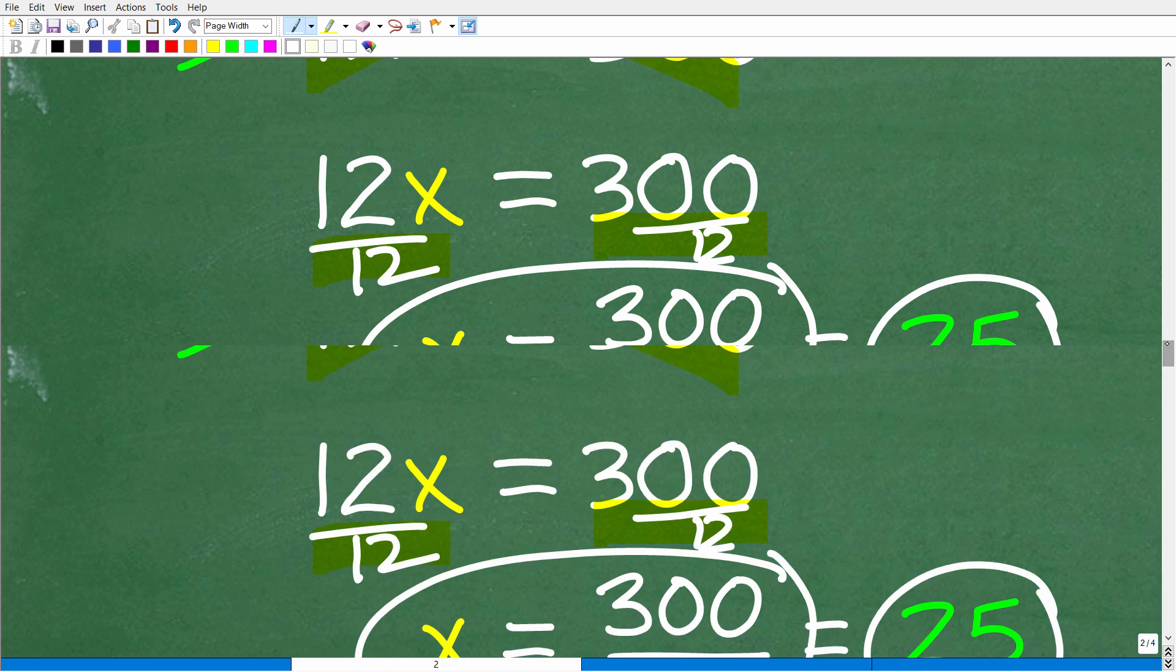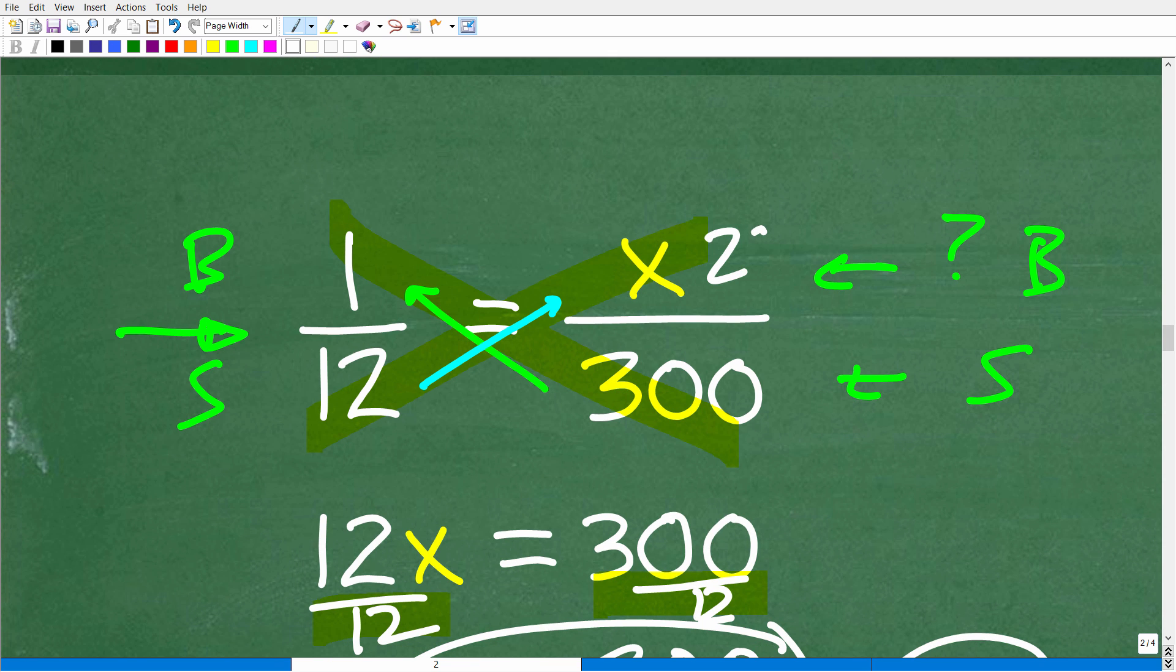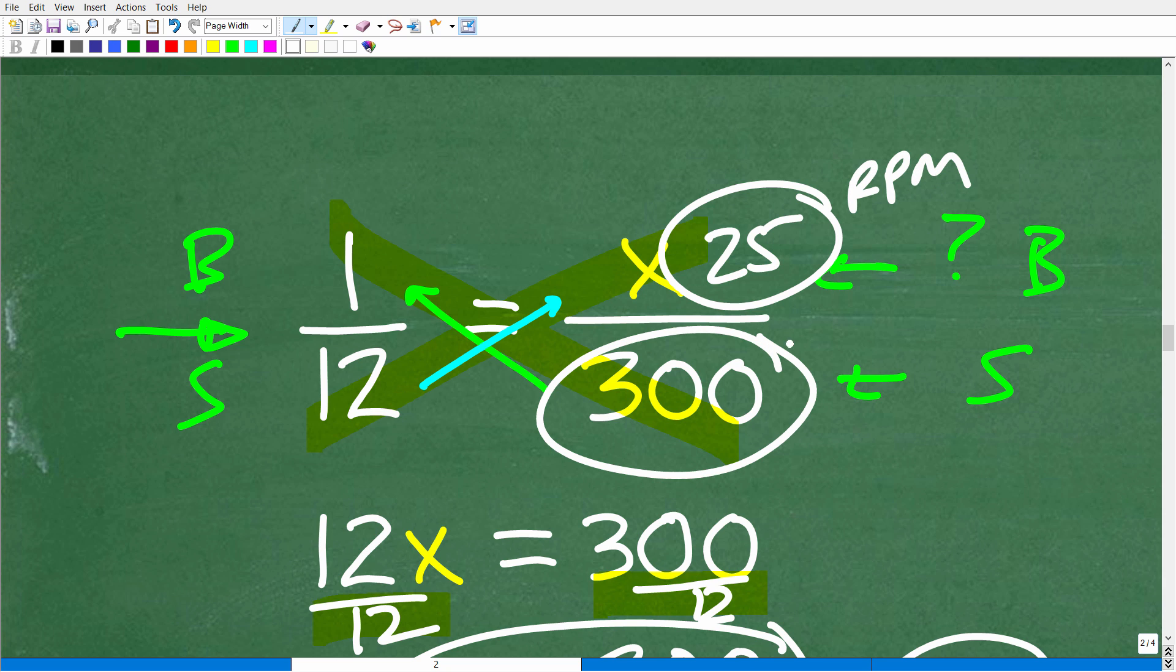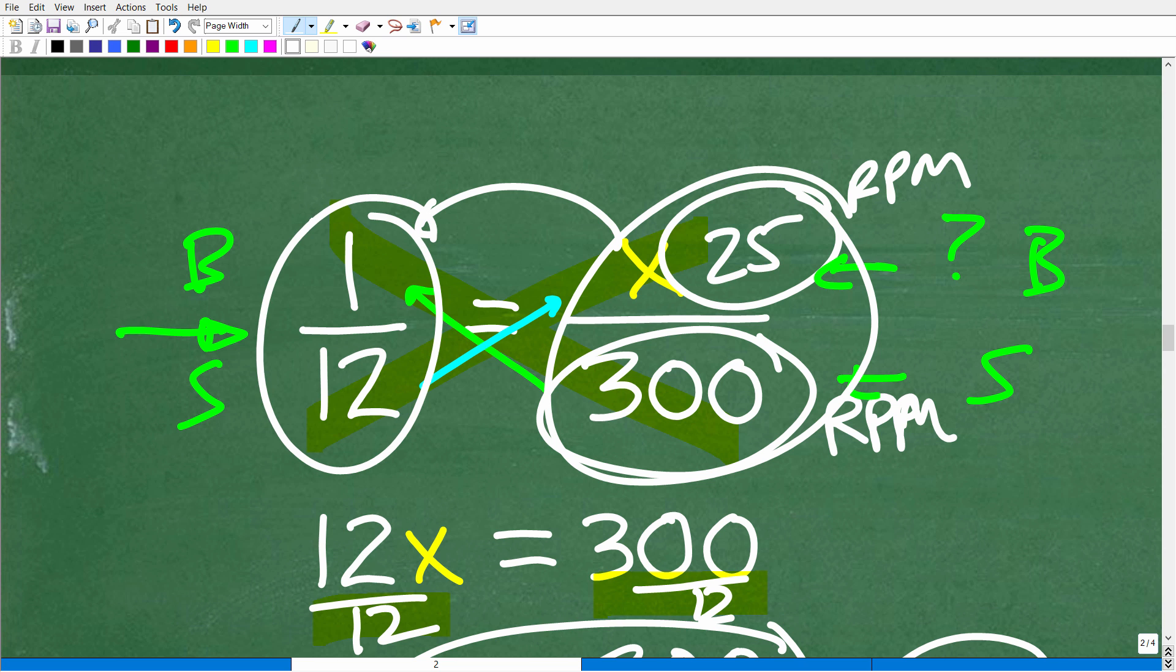So 25 RPMs. The big gear will turn 25 revolutions per minute if the small gear turns 300 revolutions per minute. This is the same proportion as 1 to 12.